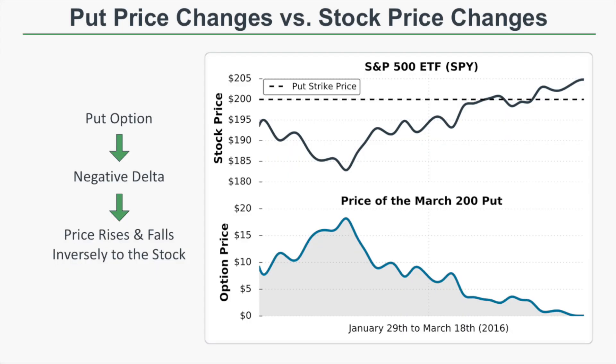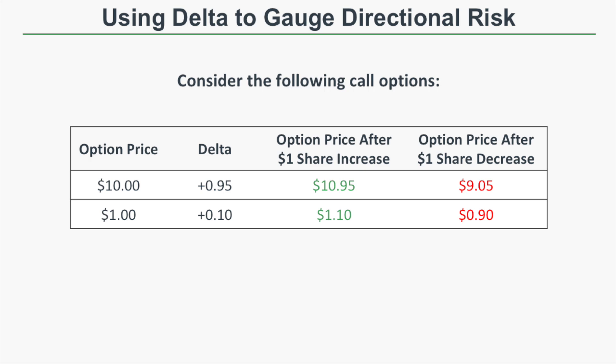Now looking at the same time period, we examine a put option's price changes versus changes in the stock price. A put option has negative Delta, so its price moves inversely with the stock price. When the stock price falls, the put price increases, and when the stock price rises, the put price decreases. This is simply an inverse relationship because the put option has a negative Delta.